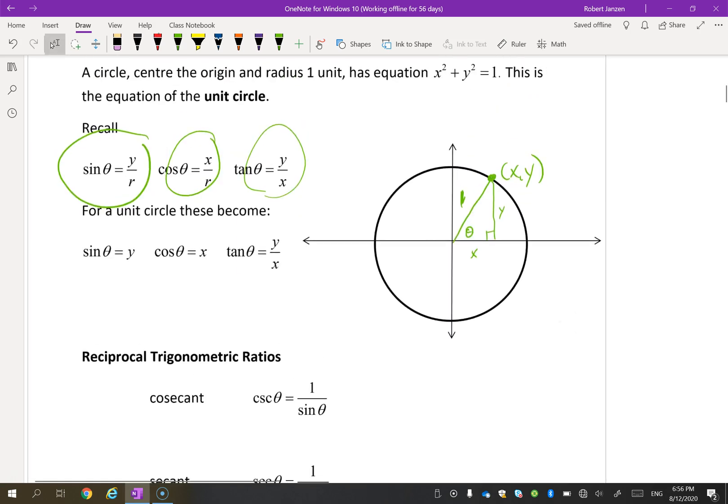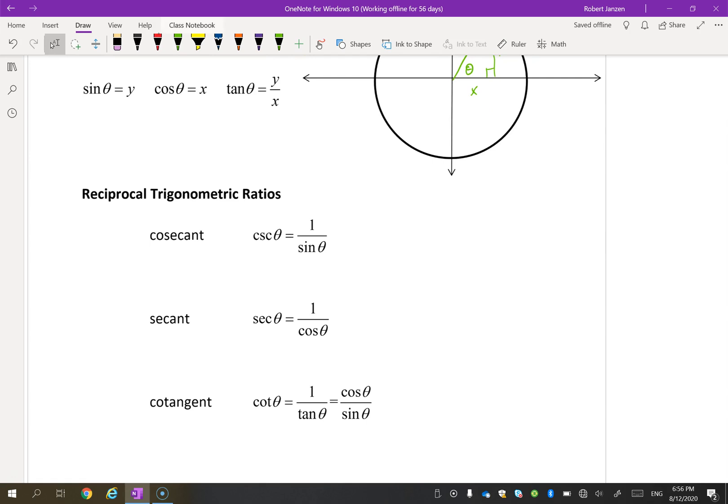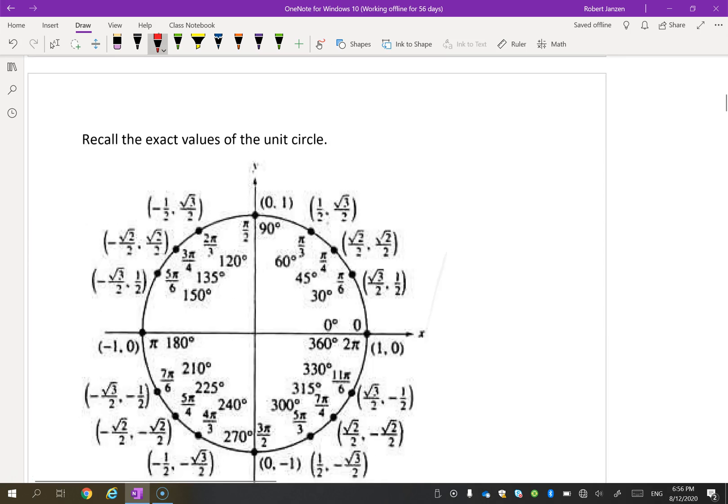Let's try a question. Oh, before we try a question, I have something new for you. The reciprocal. These are three more ratios. And they're on your formula sheet. You don't have to memorize them, but you will. Cosecant is the reciprocal of sine. Secant is the reciprocal of cos. Cotangent is the reciprocal of tan.